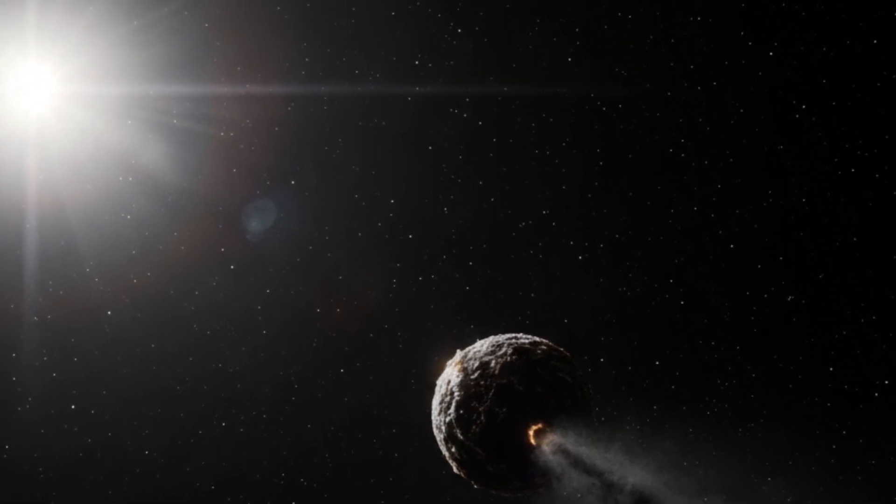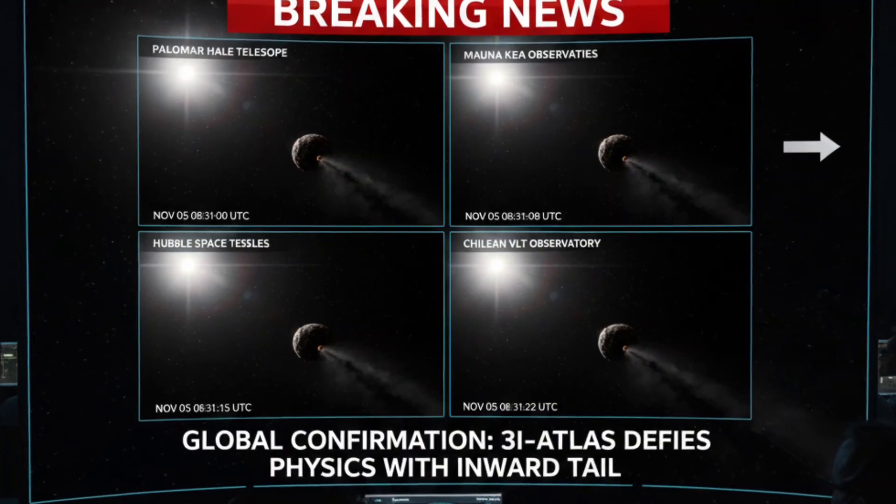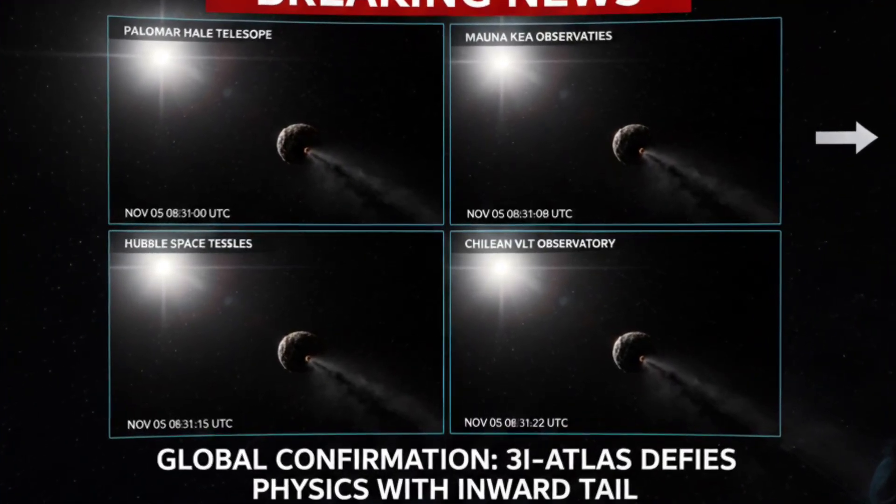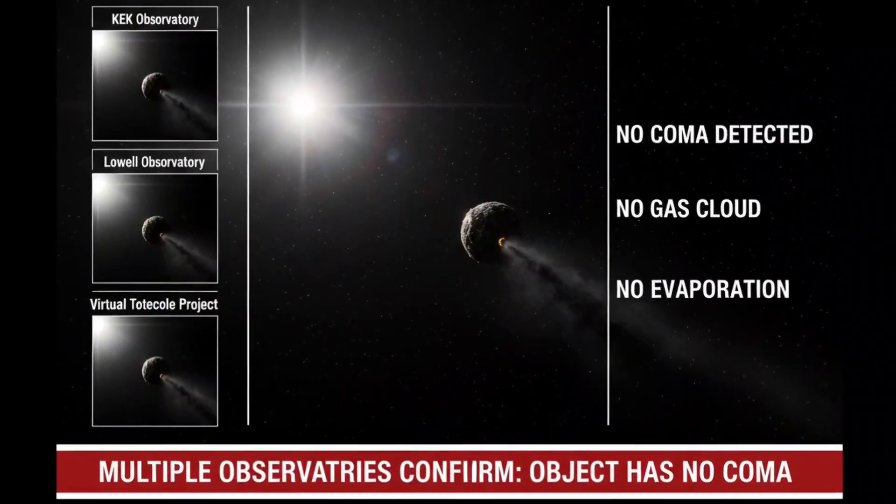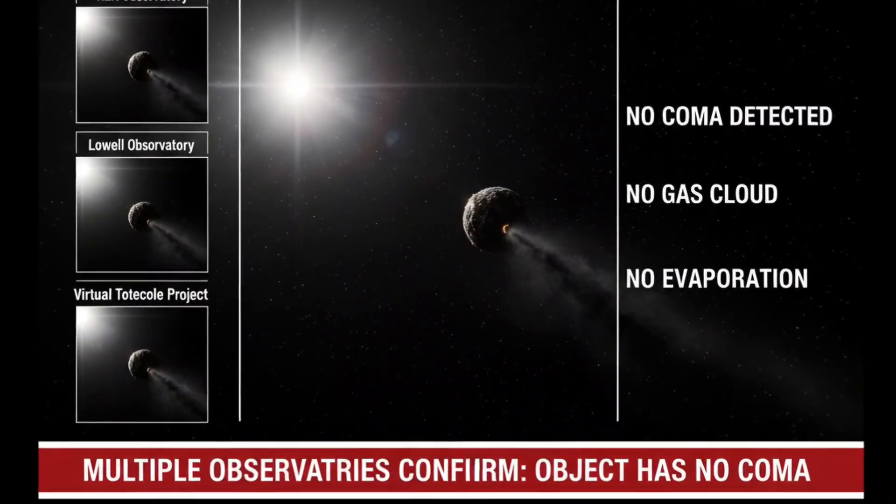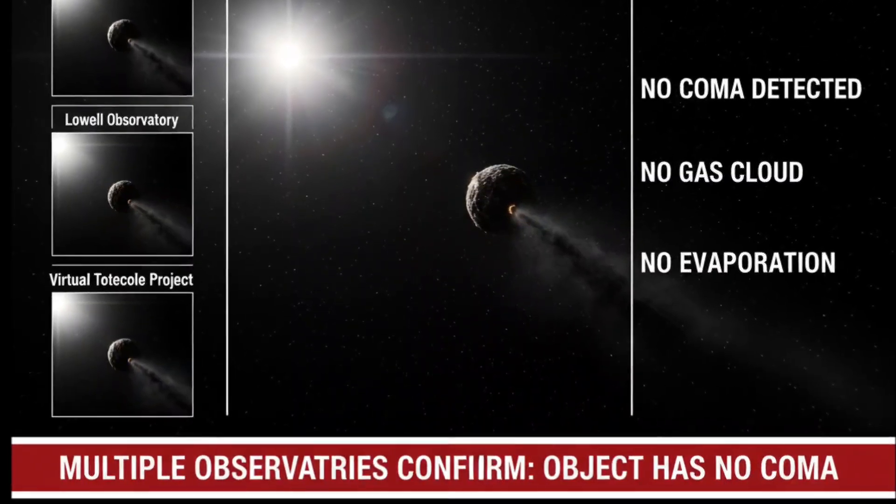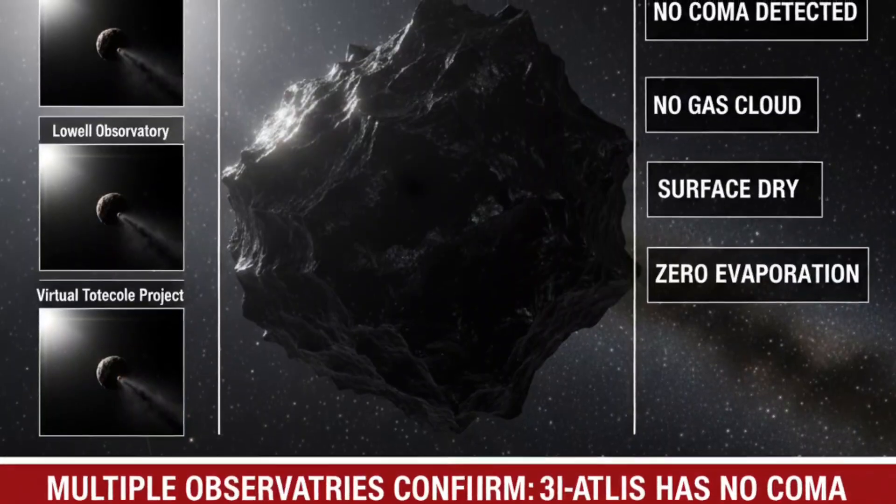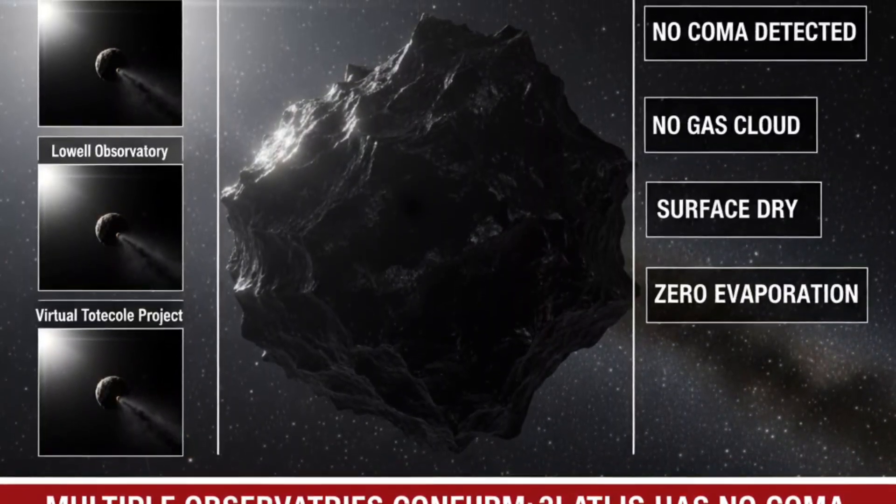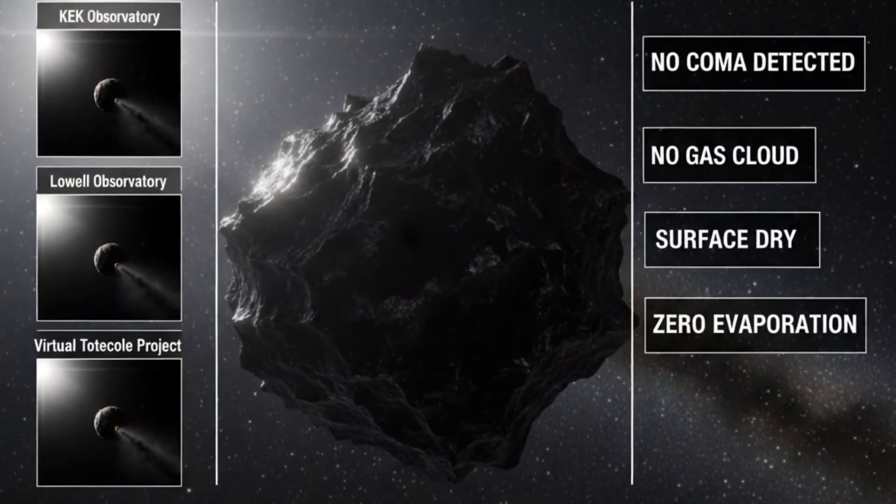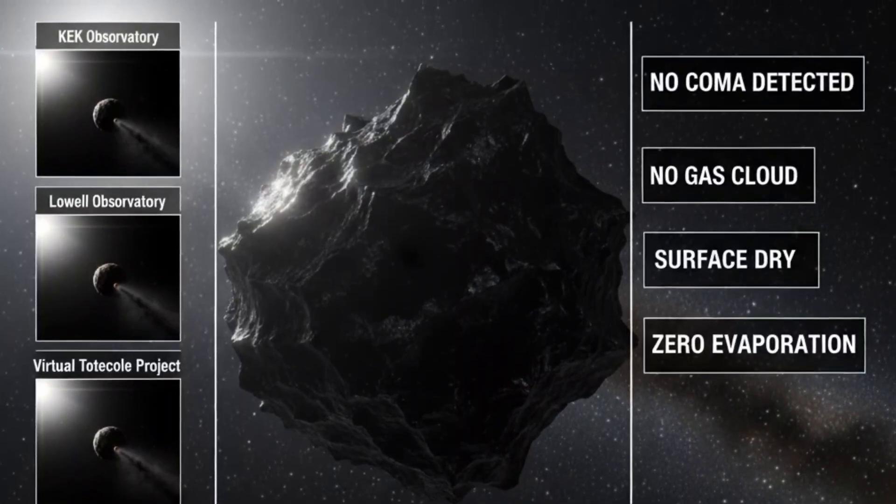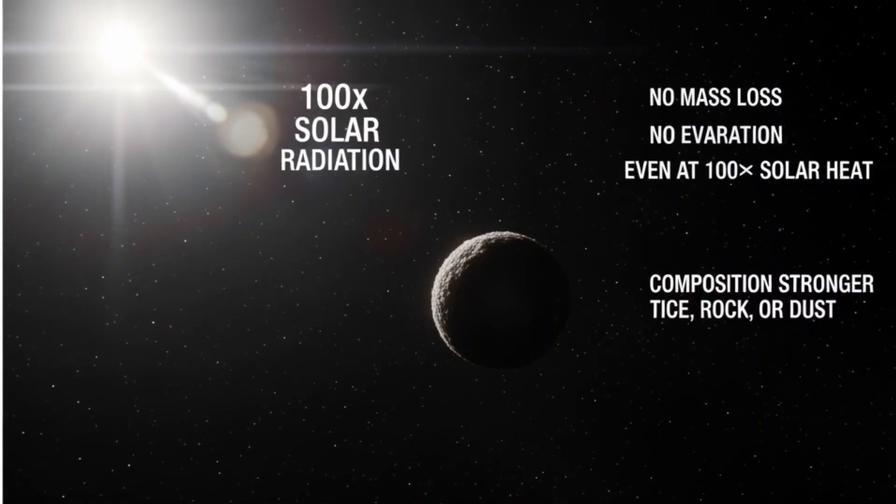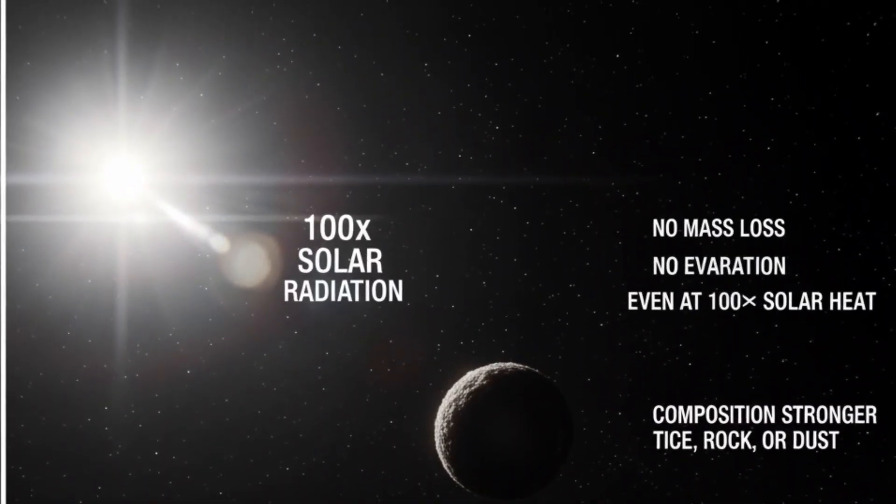Within hours, astronomers realized this was no observational illusion. The anti-tail was real, and it was growing. But that wasn't the worst part. When data from KEK Observatory and the Lowell Observatory were compared with the Virtual Telescope readings, they revealed something even stranger. There was no gas cloud around 3IATLAS. No coma. Nothing evaporating from its surface.